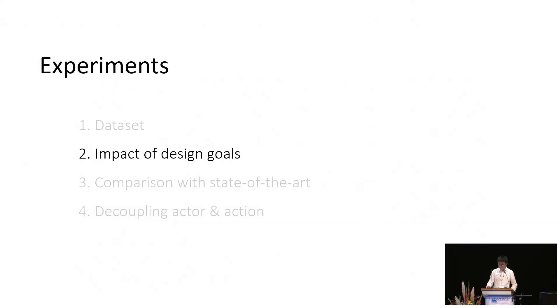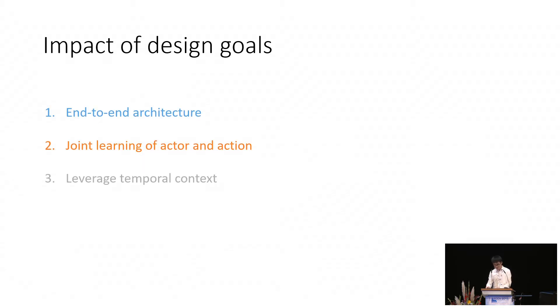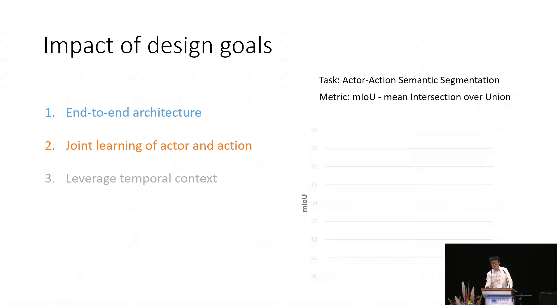We now evaluate the impact of our design goals. Recall that we wanted an end-to-end architecture, joint learning of actor action, and leverage the temporal context. To examine their impact, we designed baselines that isolate the contribution of each component at a time. In particular, we analyze the impact of each goal for our main task of actor action semantic segmentation. We measure the performance in terms of mean intersection over union. First, we implement a strong two-stage baseline that is not end-to-end. Second, we implement another baseline that trains the actor and action components separately. Third, a baseline without any temporal layers. We found that our full model outperforms all these baselines, indicating that all of our design goals play important roles in the final performance.